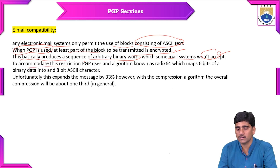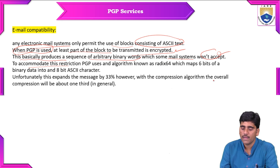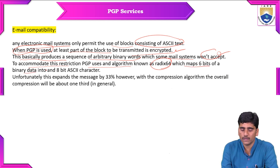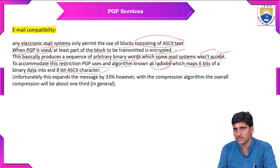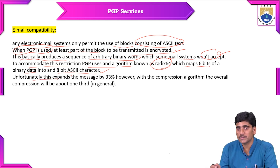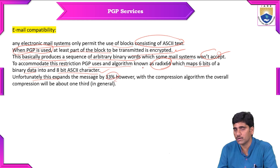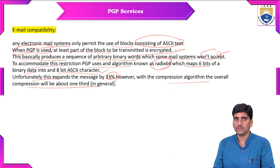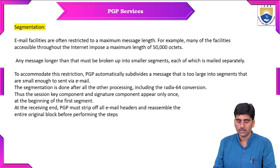To accommodate this restriction, PGP uses an algorithm known as Radix64, which maps 6 bits of binary data into 8-bit ASCII characters. Unfortunately, this expands the message by 33%. However, with the compression algorithm, the overall compression will be about one-third.